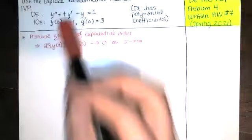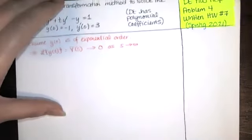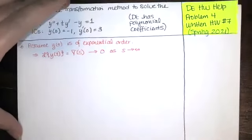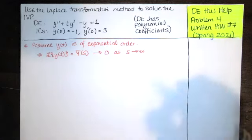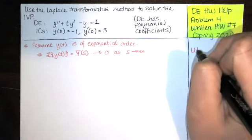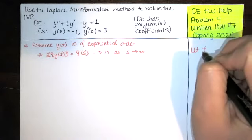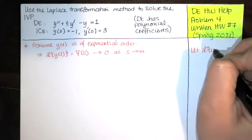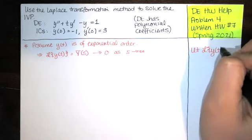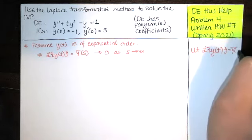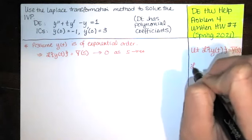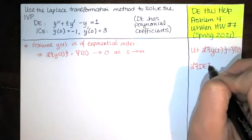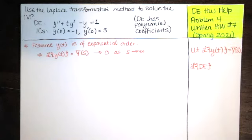There's a T in front of Y prime, which makes this the type of problem where we need this extra assumption. We start the same way we start every other problem: we let the Laplace transform of Y(T) be Y(S), and we'll take the Laplace transform of both sides of the differential equation.